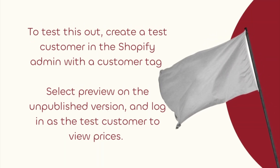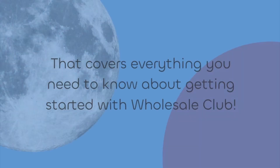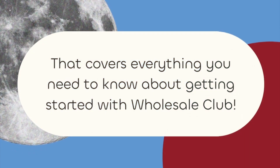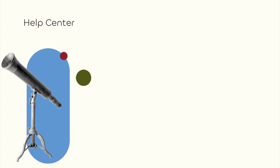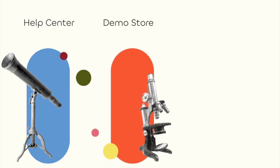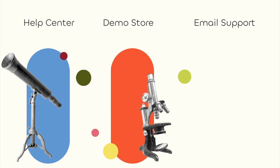To test the app, create a test account in the Shopify admin and add a customer tag to that account. Select preview on the unpublished theme version, then log in as the test customer to view the prices. If you're happy with it, you can go ahead and publish the theme with Wholesale Club. That covers everything you need to know about getting started with Wholesale Club. For more help, check out our Help Center, the Wholesale Club demo store, or email into support. Happy Selling!